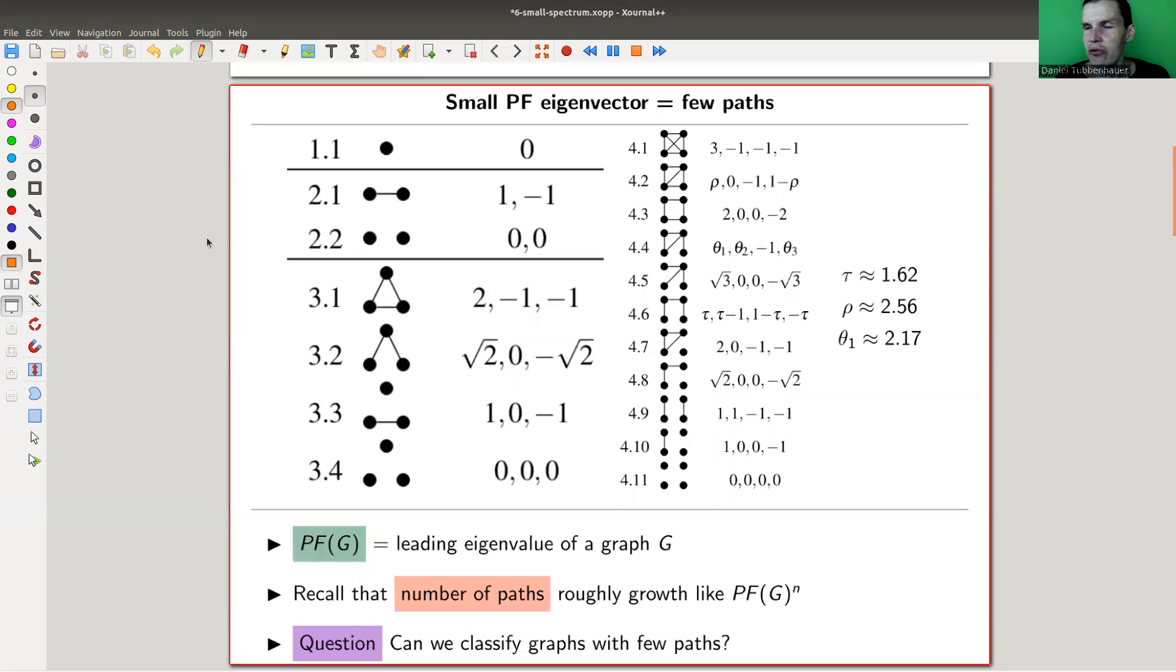Anyway, so here is a picture which we had before, kind of the spectrum of small graphs, and I'm interested in the Perron-Frobenius eigenvalue. I'm not really interested in the non-connected ones, a little boring. But here, for example, one, two, square root of two, one, and so on. Always the one to the left here, those values are given here, and they're not so super important to remember. But we want to classify graphs with a very small Perron-Frobenius eigenvalue.